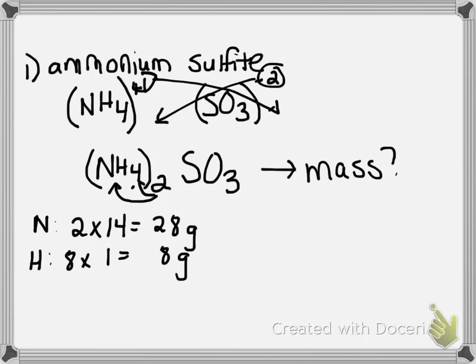Now for our mass of sulfur, we only have one sulfur, and that sulfur has a mass of 32 grams. So one times 32 is 32.